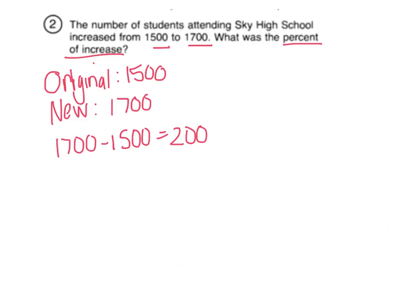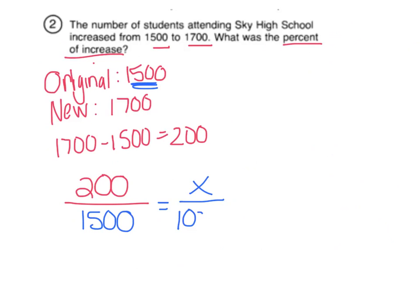It started at 1,500 and it increased to 1,700. I can now find the amount that it increased by subtracting my original from my new. So it went up 200 — that's the amount of increase over the original 1,500. We want to figure out what percent that is, so we say X over 100. We take 200 times 100, divided by 1,500, and X is about 13.3 repeating, which I know is one-third.